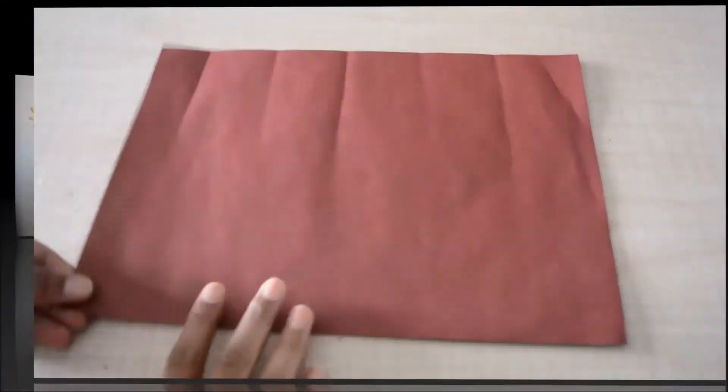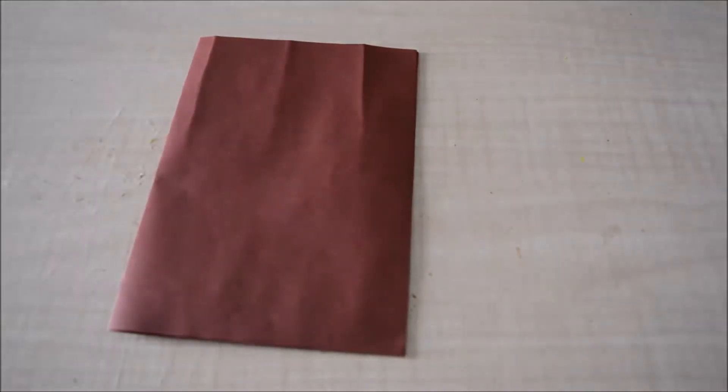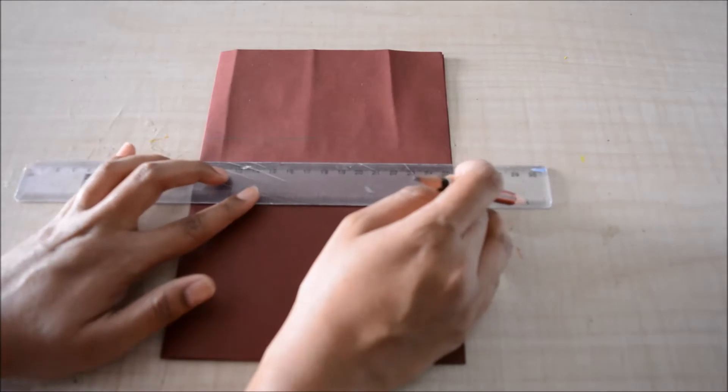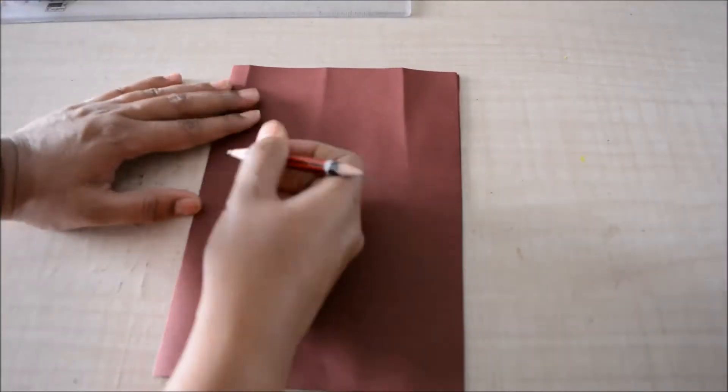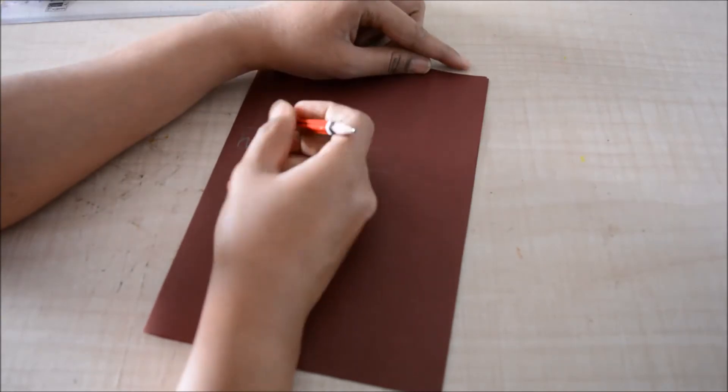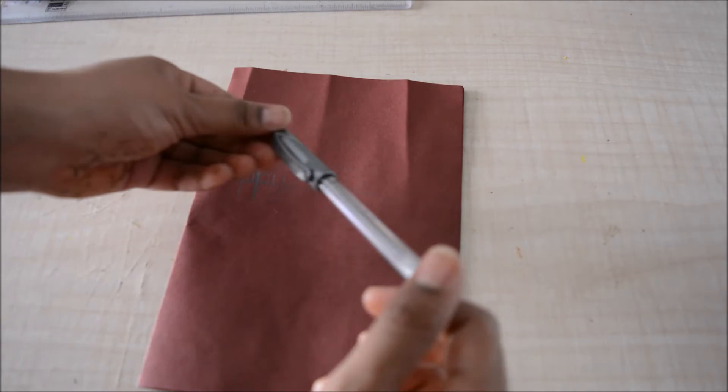So first take an A4 sized paper. I'm using a dark color and then fold it into half. Then draw two lines that will act as guidelines and write the word happy in it. So here I'm writing it in pencil first so that I don't make any mistakes, and then using this silver glitter pen I'll fill it up.